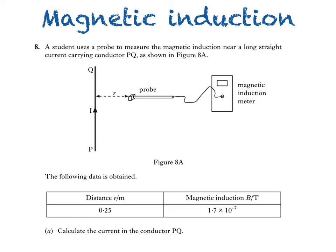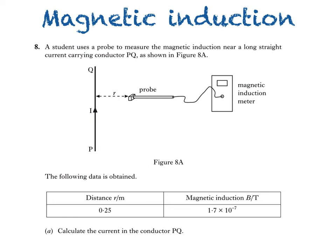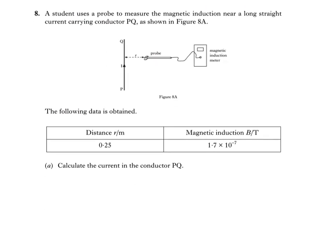Let's give ourselves more space to work out the answer. This is the equation to use: B is equal to mu naught I over 2 pi R, where B is magnetic induction — 1.7 times 10 to the negative 7 Tesla, from the table above. Mu naught is a constant called the permeability of free space, which can be found in the datasheet.